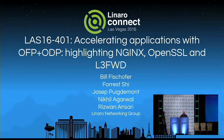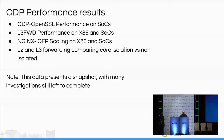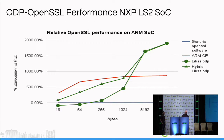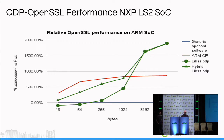A couple of things worth noting, particularly for OpenSSL: for smaller packet sizes it's cheaper to do crypto on the CPU itself rather than use an offload accelerator, which is why the ARM CE instructions on the red line perform very well for small packet sizes but tail off for larger packet sizes. Going to an offload engine gives clearly better performance for larger packets. The green hybrid line is where the ODP accelerator code tries to heuristically determine whether it's more efficient to do the crypto operation inline versus going to the offload accelerator, giving a boost over always going to the hardware.